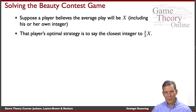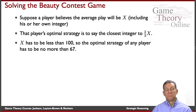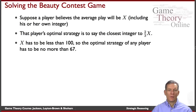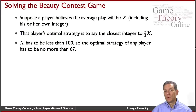We'll get to formal definitions and analysis in a little bit, but let's just go through the basic reasoning now. I should be trying to name two-thirds of what I think the average is going to be. Well, x has to be less than 100 — there's no way that the average guess can be more than 100. So the optimal strategy of any player should be no more than 67. If I think that everybody's rational, then I think that nobody should be naming an integer bigger than 67.